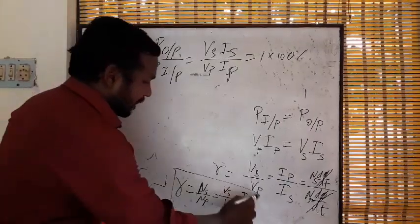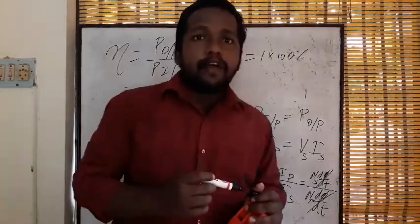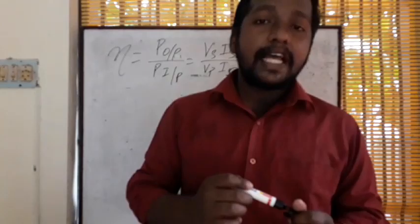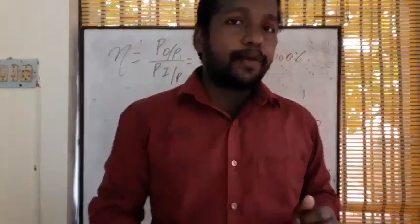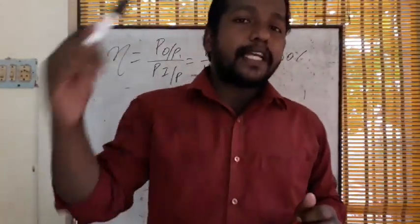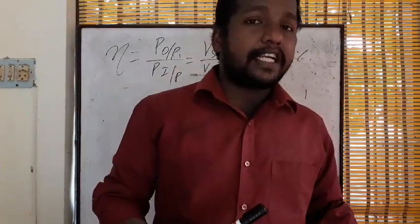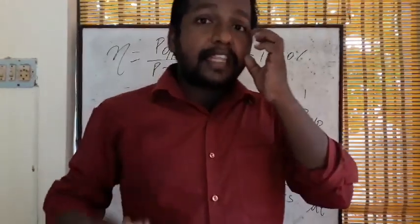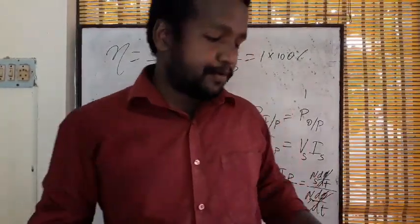This is the ratio formula for the transformer. One more important point: where the current is higher, you should use thick wire. If the current is more in the primary coil, make the primary coil wire thick. If the current is more in the secondary coil, make the secondary coil wire thick. Where more current flows, more heat is produced. Thank you.